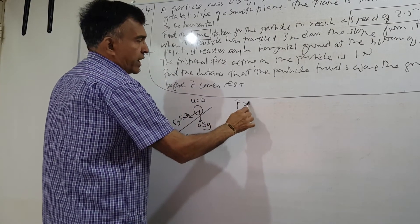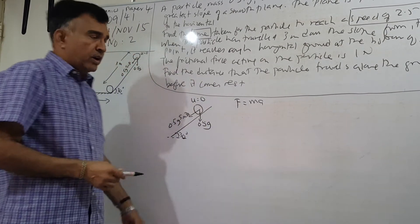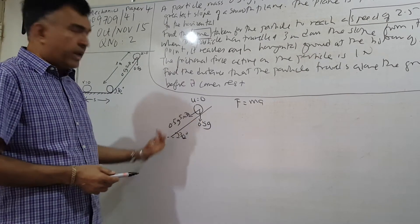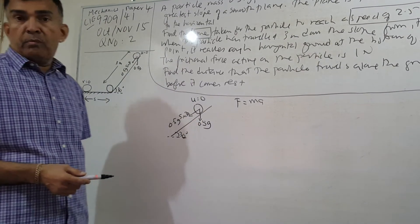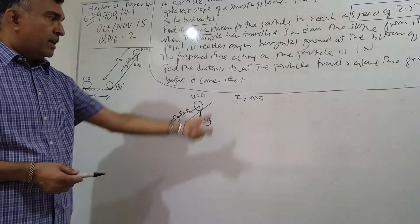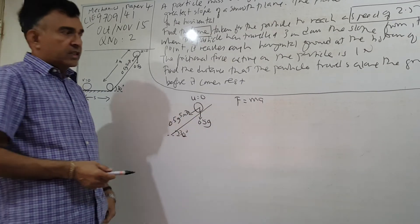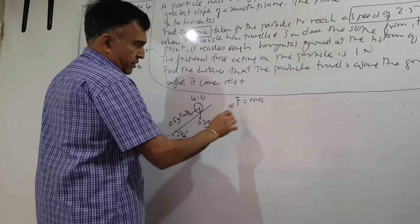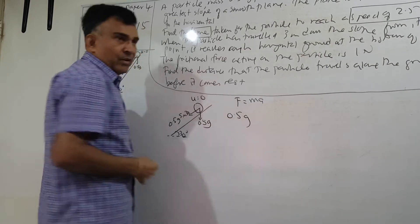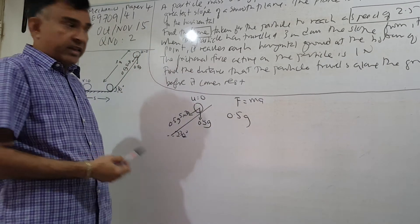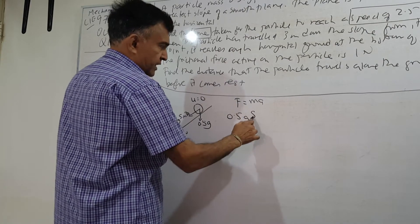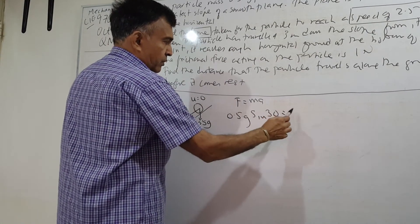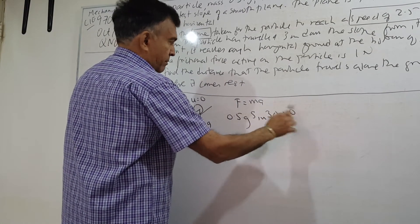Using F equals ma, the only force acting on this particle is the weight component which is parallel to the plane as I've indicated here. Let's use F equals ma and work out the acceleration. The resultant force will be mg sine theta, so it's 0.5g sine 30 equals my mass, 0.5 kg, times a.